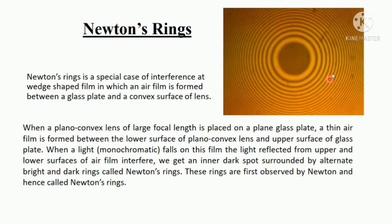This is the pattern we observe in Newton's ring. Newton's ring is a special case of interference at wedge shaped film in which an air film is formed between the glass plate and the convex surface of the lens.